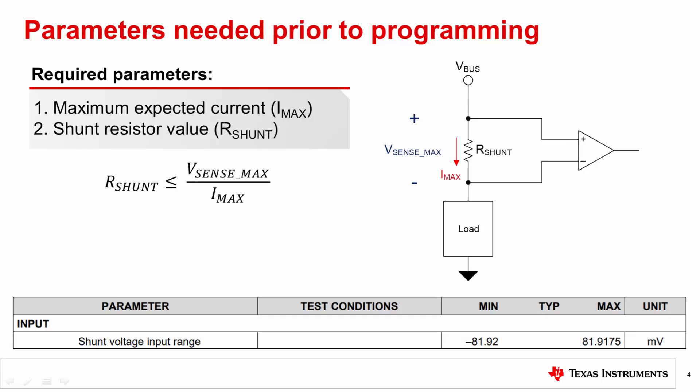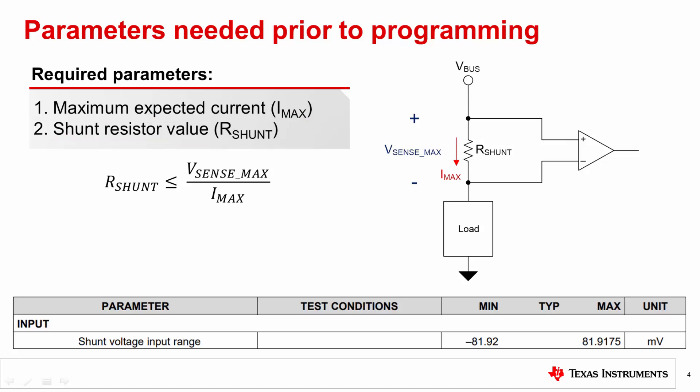Now let's get started on the steps to configure these devices for current and power readings. We need to know two parameters from the application: maximum expected current, or Imax, and shunt resistor value, or Rshunt. When selecting the shunt resistor value, we should keep in mind the maximum allowable input voltage range of the device.